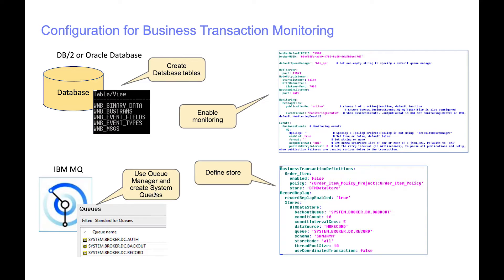This slide gives an overview of what configuration is needed. In order to use Business Transaction Monitoring, you must have a database and IBM MQ installed. Currently, only DB2 and Oracle databases are supported by IBM AppConnect Enterprise for Business Transaction Monitoring. Configuration must be made in the node.conf.yaml to enable monitoring for node-owned servers that have the message flows deployed. A data store must be defined in a server.conf.yaml for the integration server that is used for recording the data to the database.